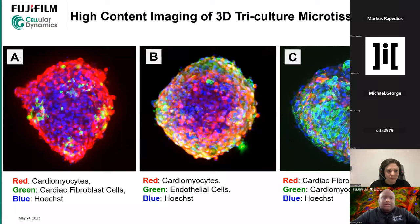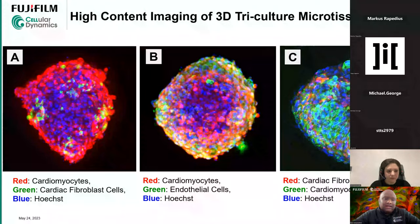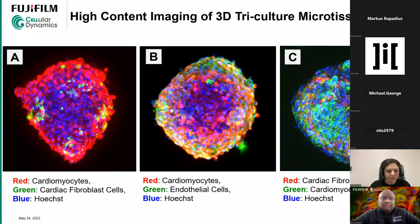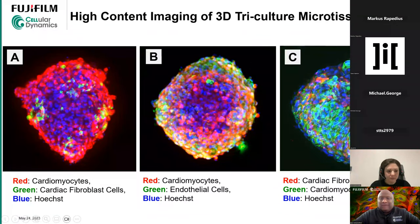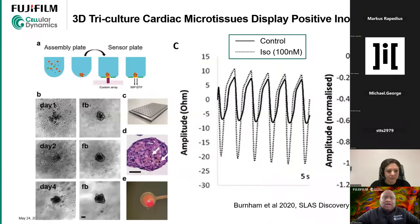This is immunostaining done in collaboration with Molecular Devices. In panel A, red is cardiomyocytes and green is cardiac fibroblasts; in panel B, green is endothelial cells and blue is nuclei. On the right, the colors are switched — red is cardiac fibroblast and green is cardiomyocytes. What this shows is that these three cell types really integrate nicely, spread out well, and form these nice cardiospheres.